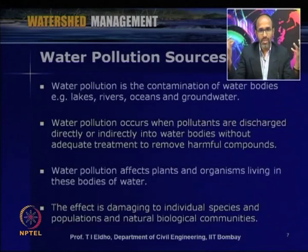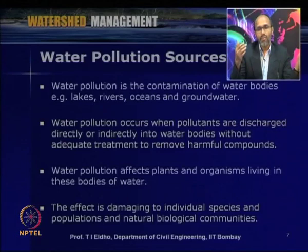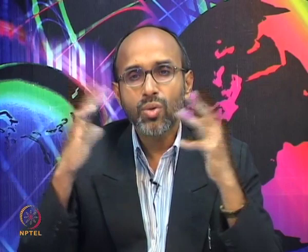Water pollution affects plants and organisms living in these bodies of water. Aquatic life will be affected due to pollution, and water used by plants for irrigation or other purposes will also be affected. The effect is damaging to individual species, populations, and natural biological communities. As far as water pollution sources are concerned, we can generally classify into two types: point source and non-point source, depending upon what is coming and polluting.